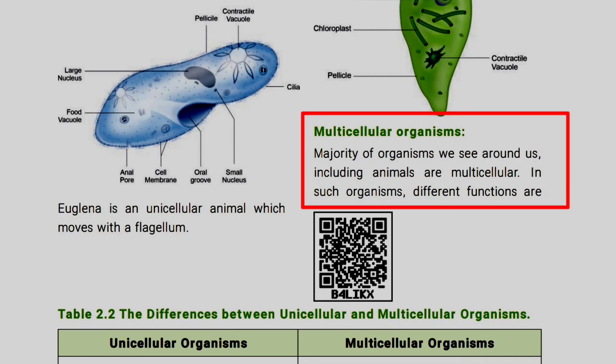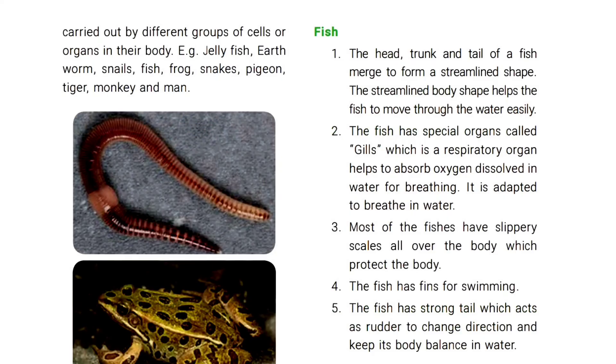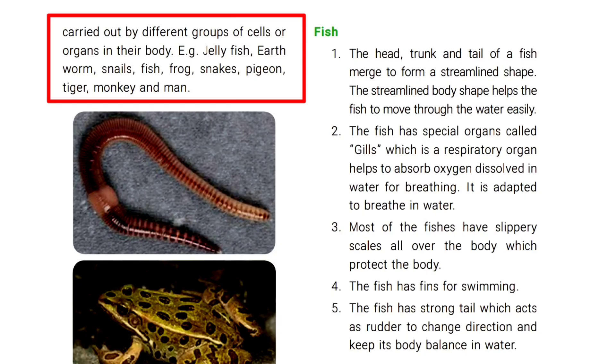Most of the organisms we see around us, including animals, are multicellular. In such organisms, different functions are carried out by different groups of cells. For example, jellyfish, earthworms, fish, frog, snake, pigeon, tiger, monkey, and man.